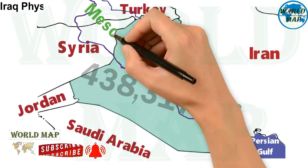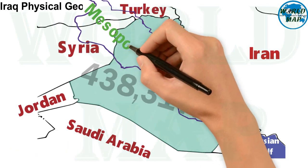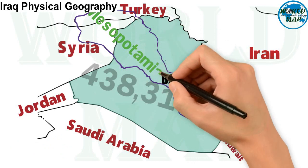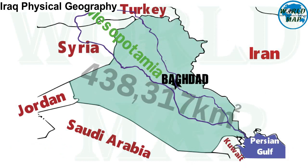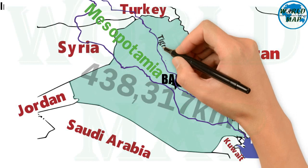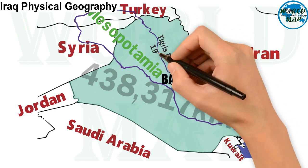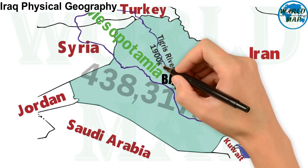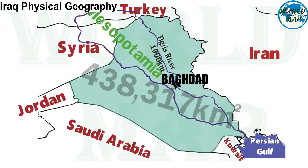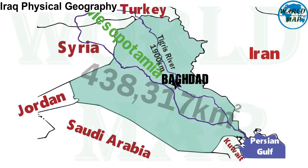Mesopotamia is the land between the Tigris and Euphrates rivers. The Tigris river is the eastern member of the two great rivers that define Mesopotamia. The river flows from the mountains of southeastern Turkey through Iraq.